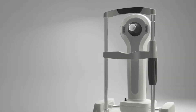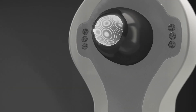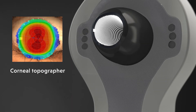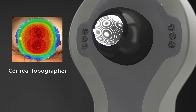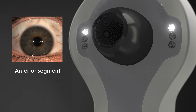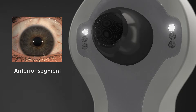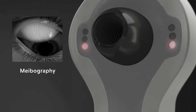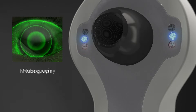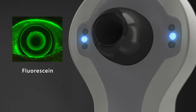The Medmont Meridia is many instruments in one. It is first and foremost a corneal topographer, but the imaging options allow it to take anterior segment white light captures, meibography, as well as fluorescein assessment.